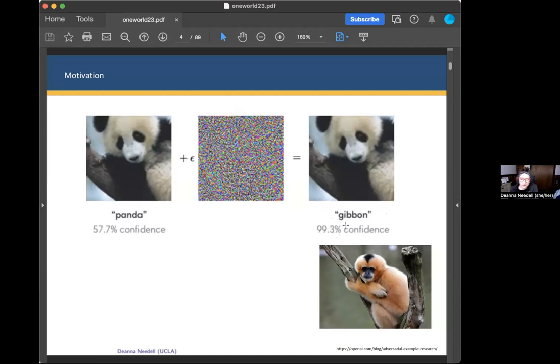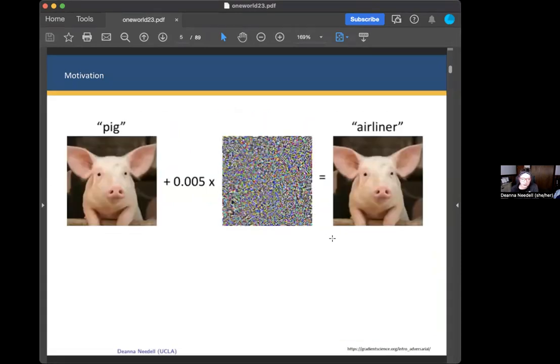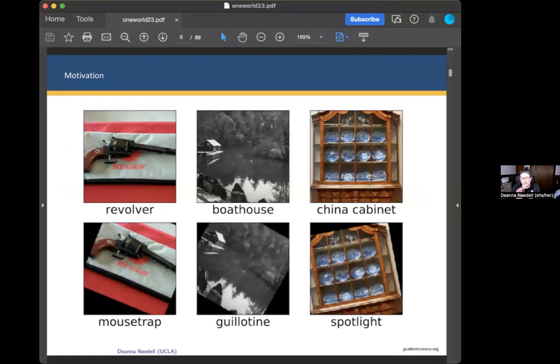Even more devastating is that the confidence has actually increased quite drastically. Other classical examples include a pig becoming an airliner. Other things besides adding distortion can also fool these neural nets. For example, if you take an image and rotate it, this revolver, which was correctly identified, has been rotated and now the neural net believes it's a mousetrap. Same with a boathouse becoming a guillotine and a china cabinet becoming a spotlight.